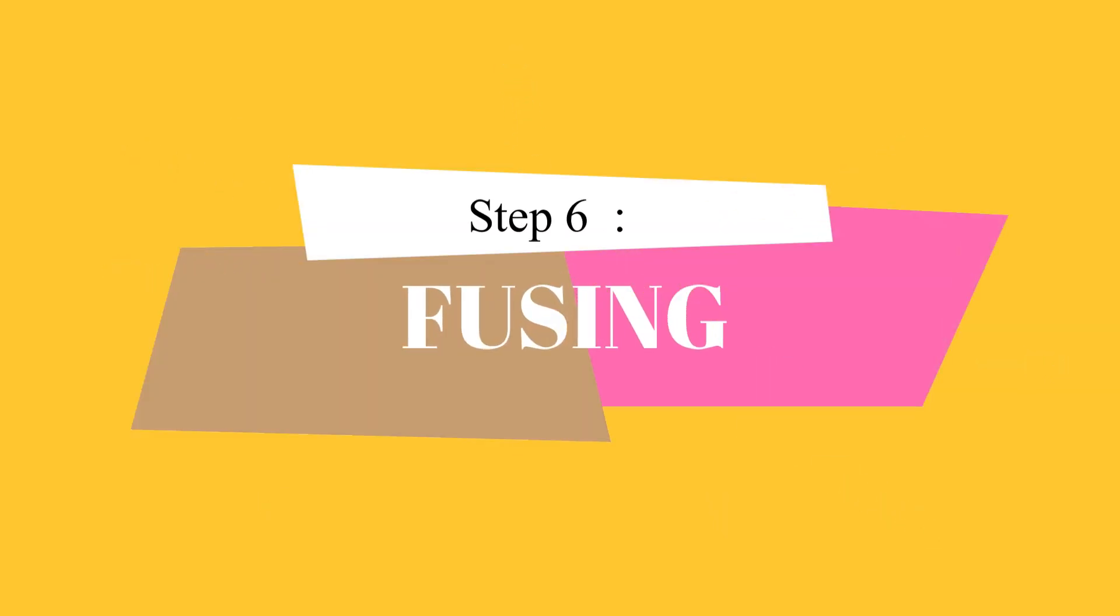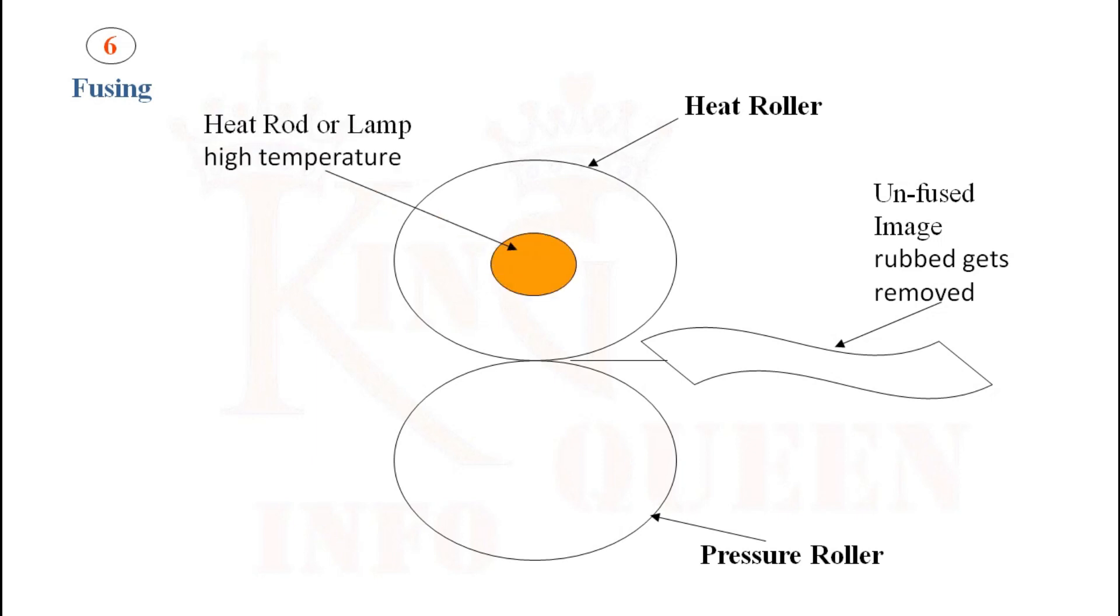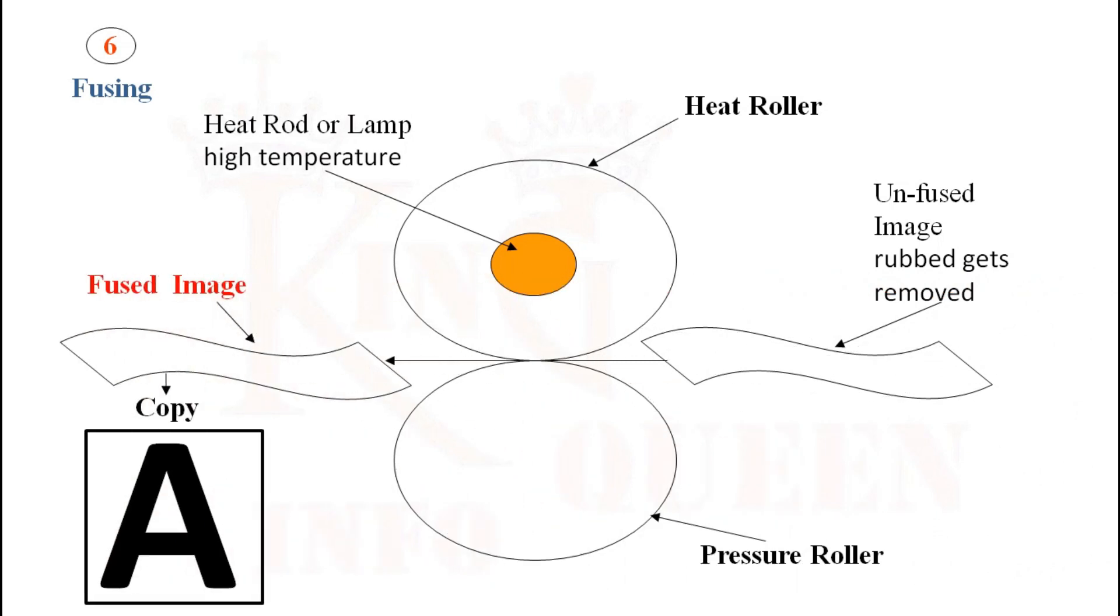Step 6: Fusing. The toner image transferred onto the paper from the photoreceptor, if rubbed, gets removed. The paper having loose toner image is passed between heat and pressure rollers. Because of the high temperature of the heat roller, toner melts and gets into the pores of the paper.